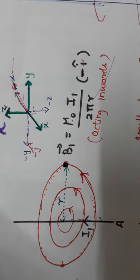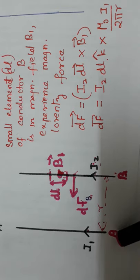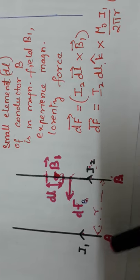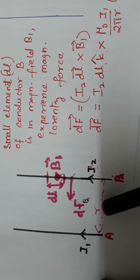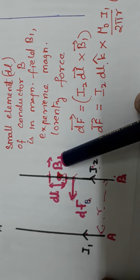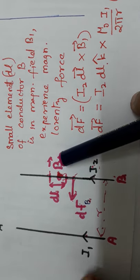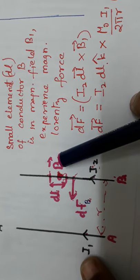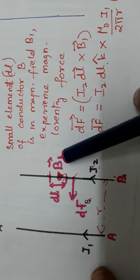Now for deriving the force between two parallel current-carrying conductors, refer to this diagram. You can see two conductors A and B with currents I₁ and I₂, both separated by a distance R. Conductor A with current I₁ produces a magnetic field B₁ at a distance R from the wire.